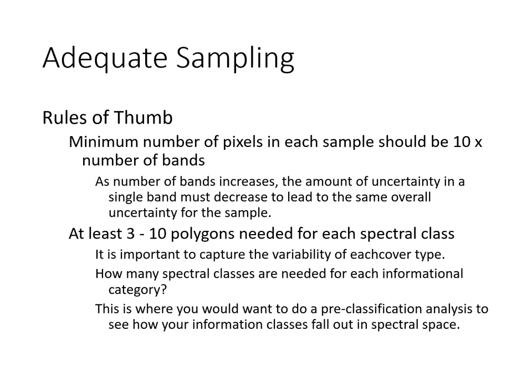Some rules of thumb on adequate sampling: the minimum number of pixels in each training data sample should be about 10 times the number of bands, because as the number of bands increases, the amount of uncertainty in a single band has to decrease to maintain the same overall uncertainty. You need at least 3 to 10 polygons for each spectral class — 3 for something easy to distinguish like water, but probably 10 or possibly 20 or more for other classes — and it's important to capture the variability of each cover type.